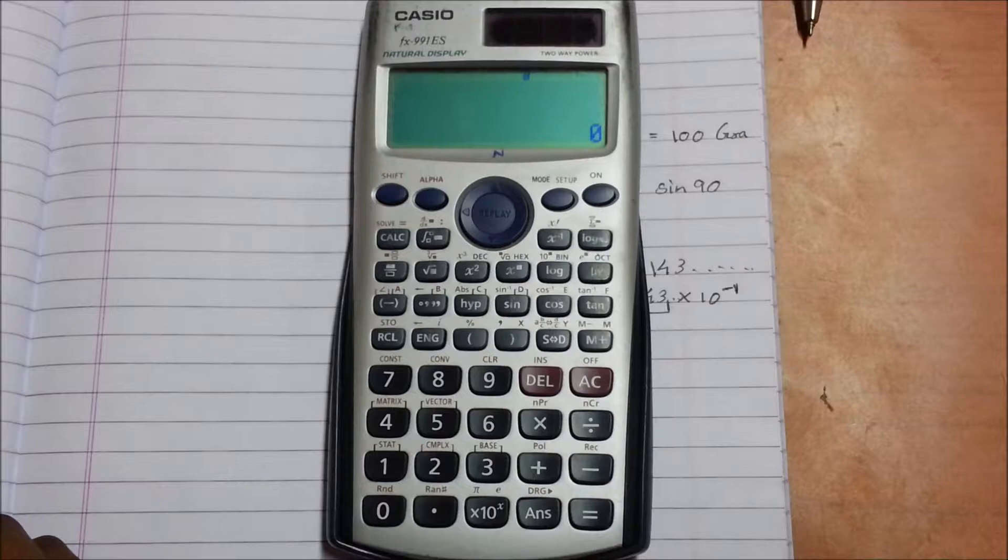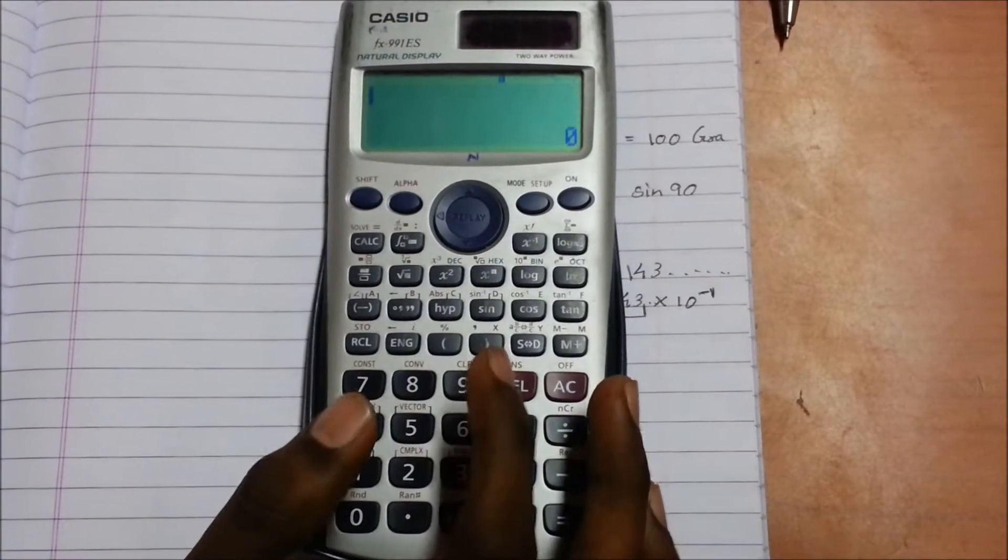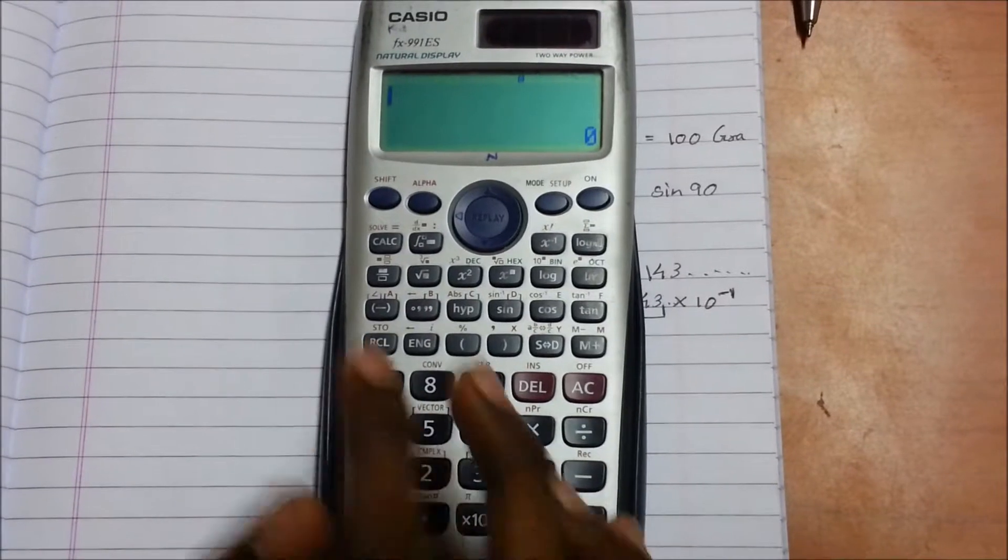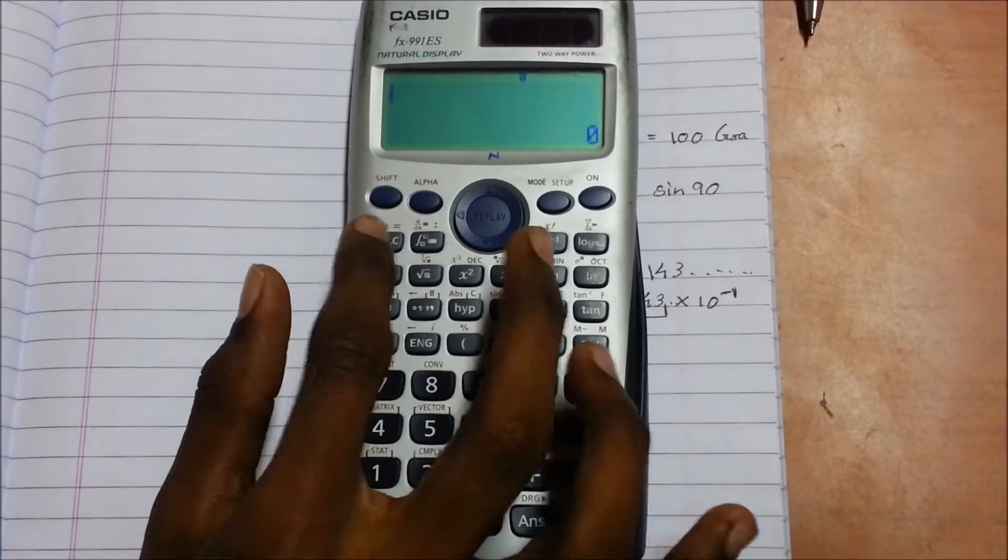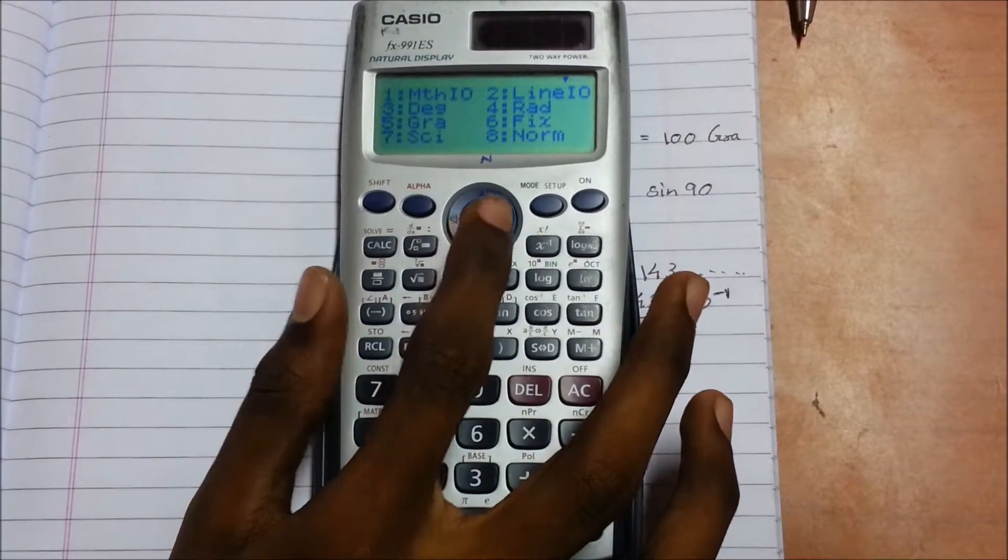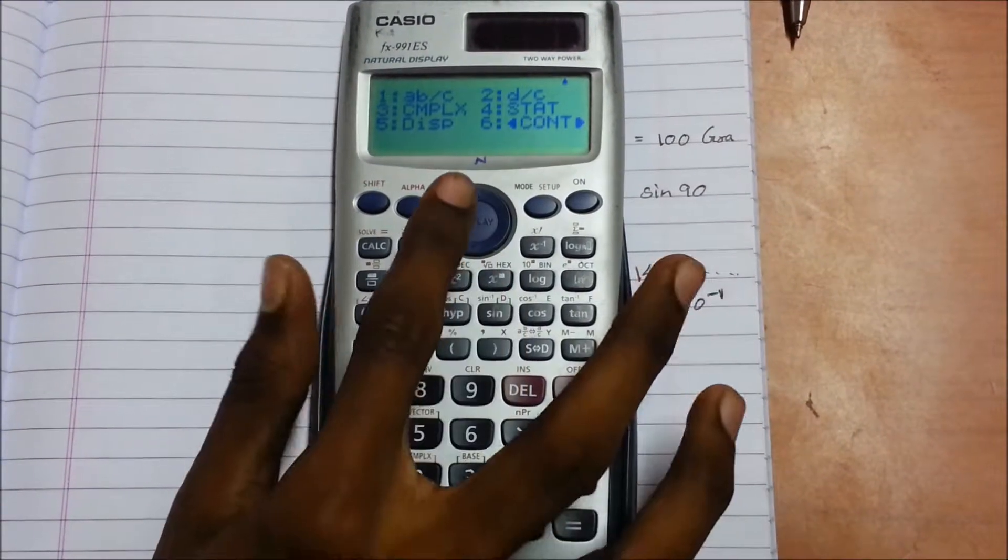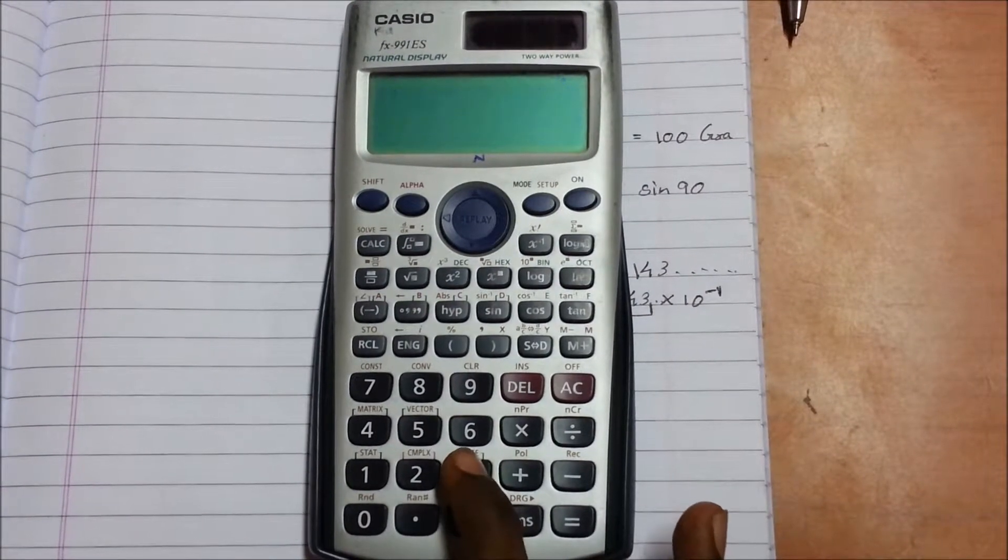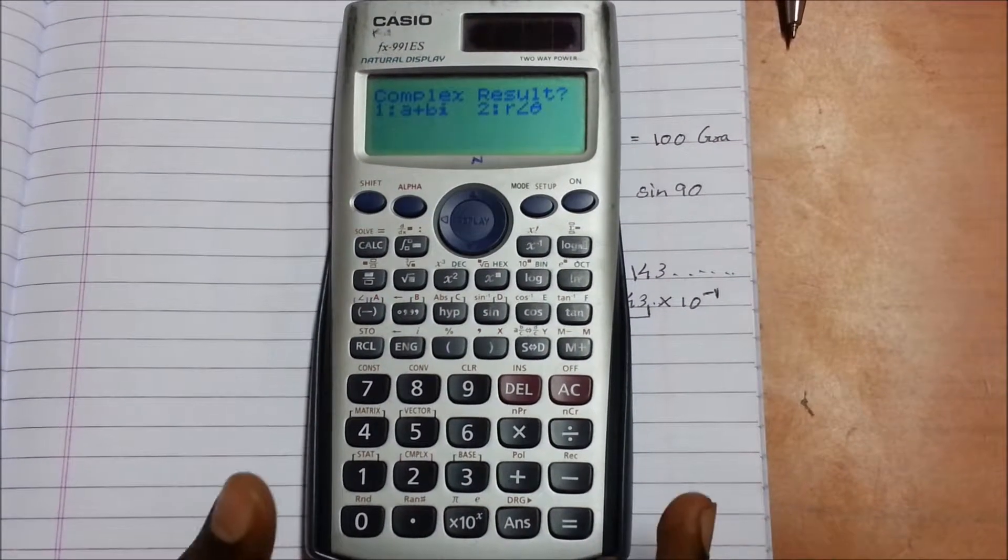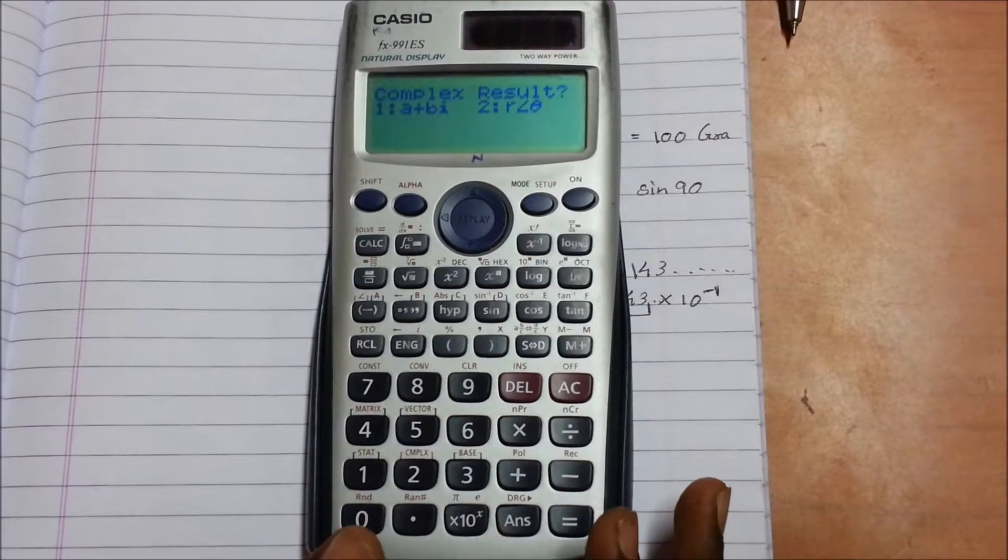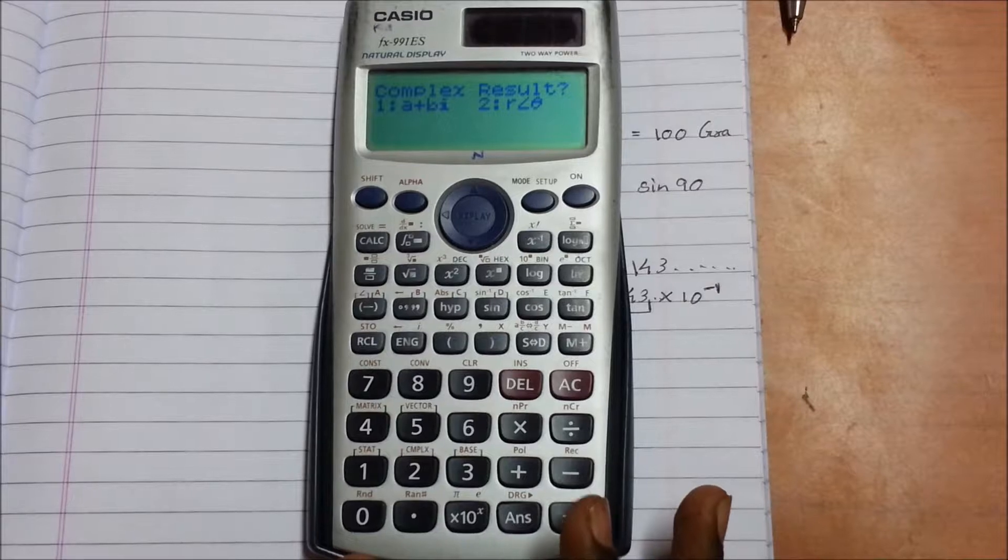Let's start with the next function, the complex function. Go to the setup page by pressing shift setup, press the down arrow to go to the second page, and here you'll find complex in third number. Press the third number and it shows the complex result format. When you're using complex mode and solving a complex value, it will show the answers in the given format.